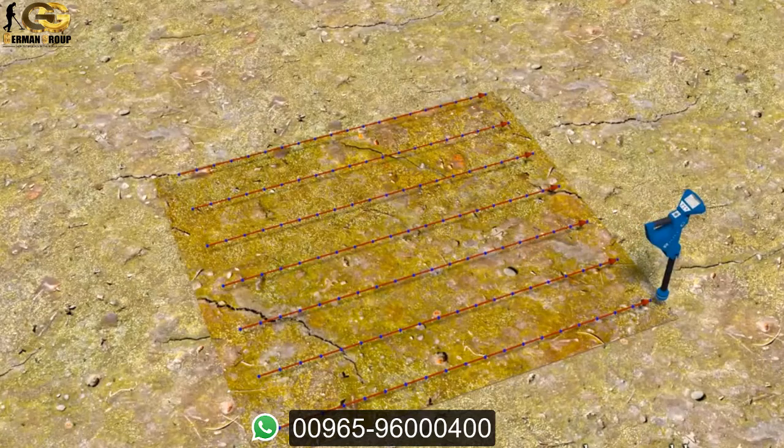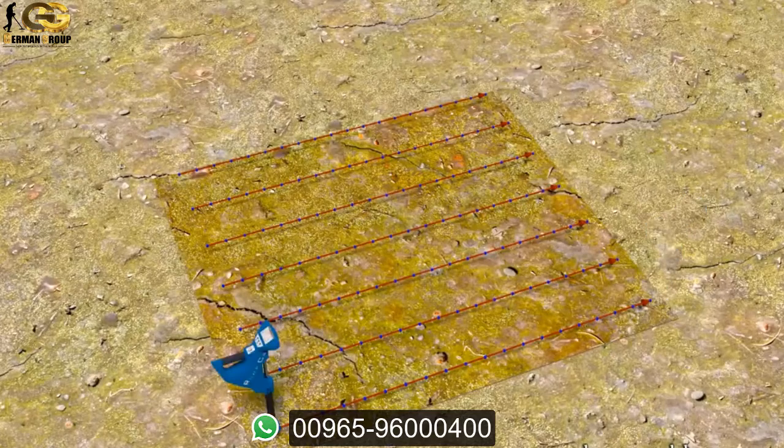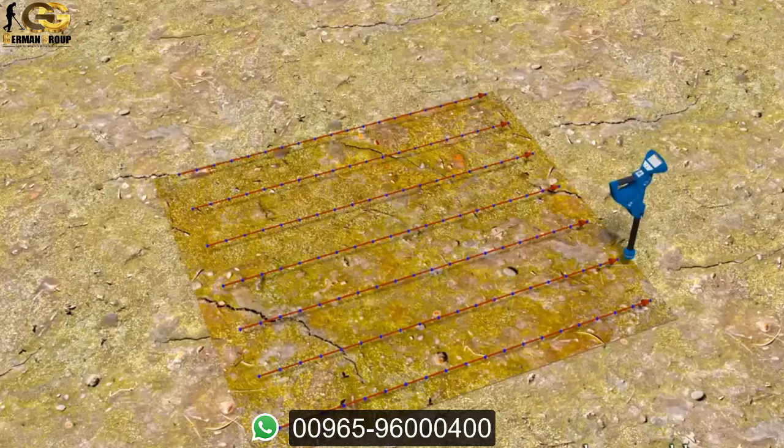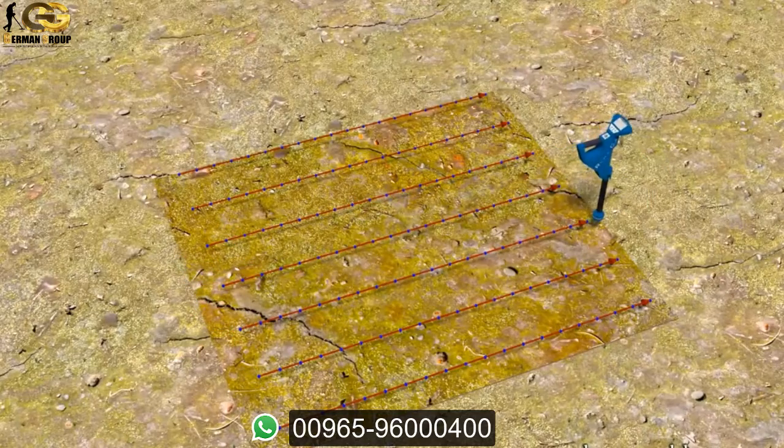If the first line has been finished you come back without measuring and then you step to the left to scan the next path. This procedure is repeated for all scanning paths.